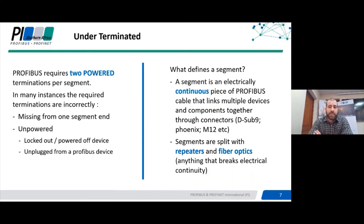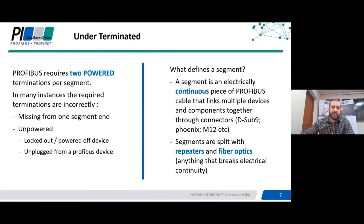Terminating resistors are enabled to prevent these reflections. Profibus typically requires two powered termination resistor circuits per segment. These resistor circuits are built into Profibus connectors and some devices, and you enable them by turning on a simple switch on a connector or on a device. Connectors are typically sub-D9 connectors, Phoenix connectors, or M12.